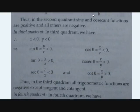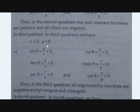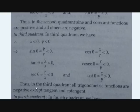In the third quadrant, X is less than zero and Y is less than zero. So sine theta is less than zero and cos theta is less than zero. For tan theta, both X and Y are negative, so the negatives cancel and tan theta is greater than zero. Cosecant is less than zero and secant is less than zero.